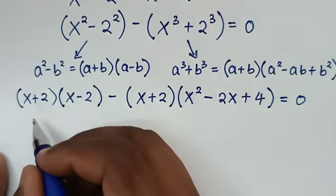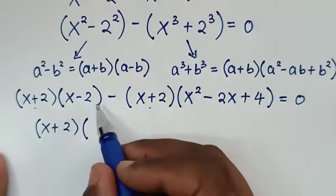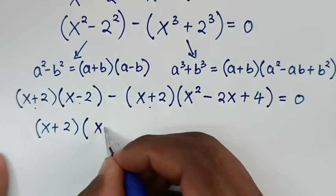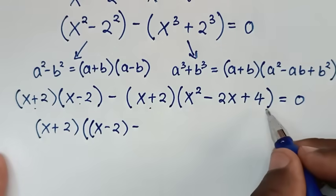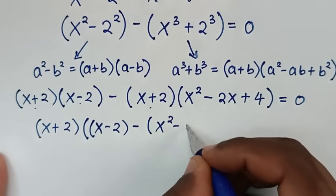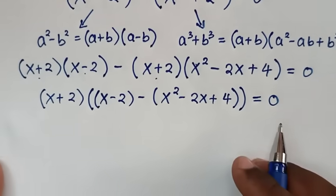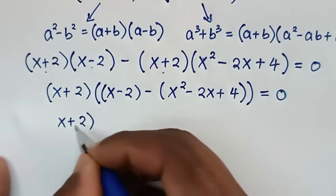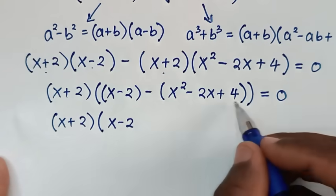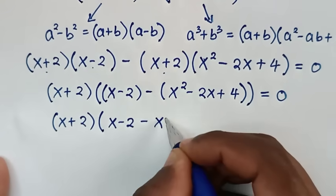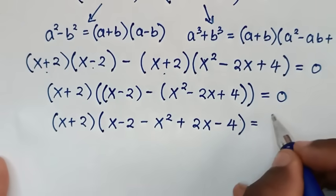In the next step, x plus 2 is common, so we factor it out. This gives x plus 2 times the bracket containing x minus 2 times the quadratic expression (x squared minus 2x plus 4). Then we open the bracket with the negative, giving negative x squared, positive 2x, and negative 4, equal to 0.